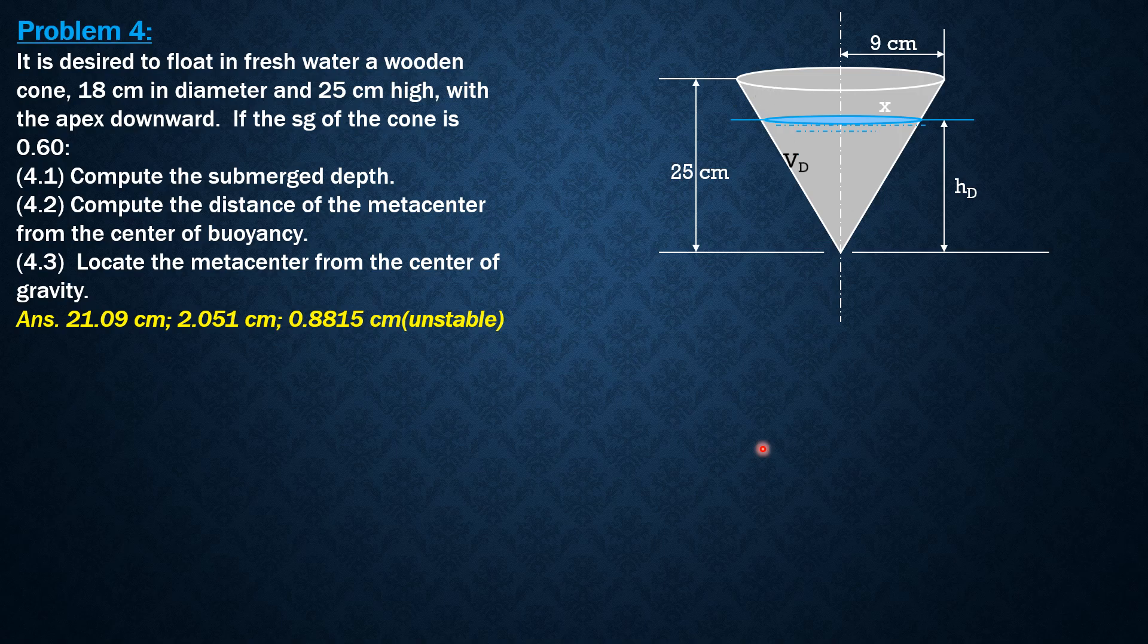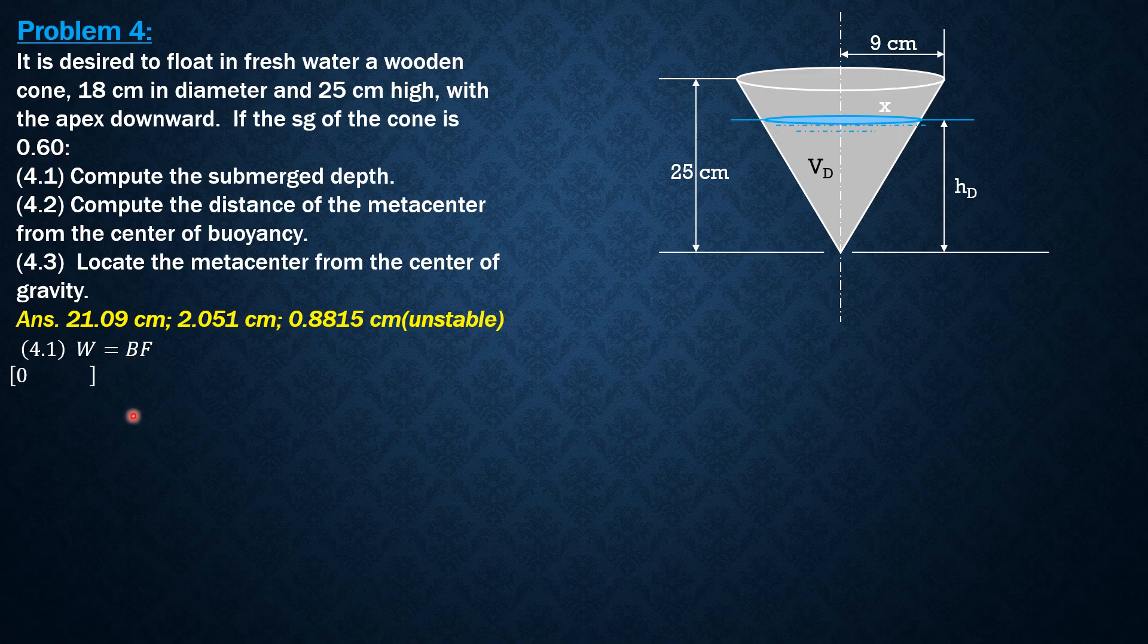So for volume displaced, let's call that VB, and the volume of the cone V sub C. Weight equals buoyant force. The weight of the wooden cone is 0.6 times gamma of water times volume of cone, while the buoyant force is gamma of water times volume displaced. Cancelling out gamma of water, that means volume displaced is 0.6 of volume of cone.